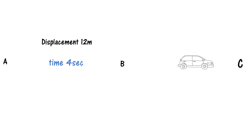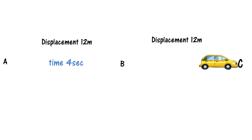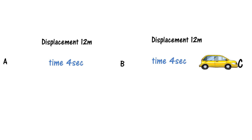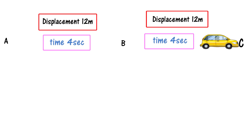Now the car continues from point B to point C. The displacement from point B to point C is also 12 meters, and the time taken by the car to move from point B to point C is also 4 seconds.